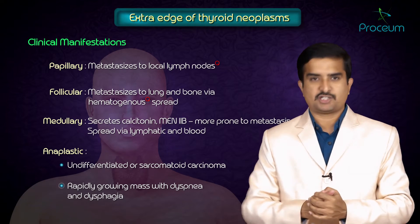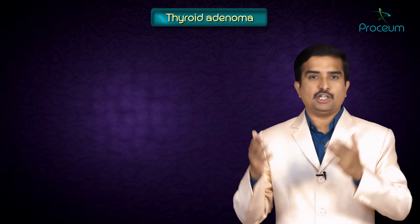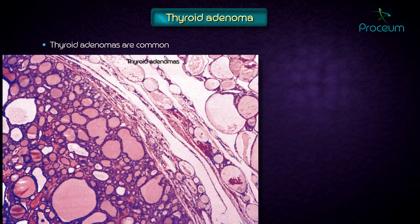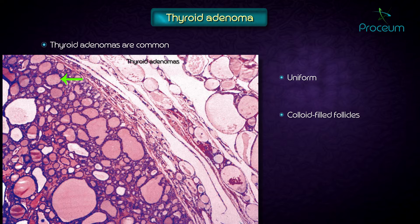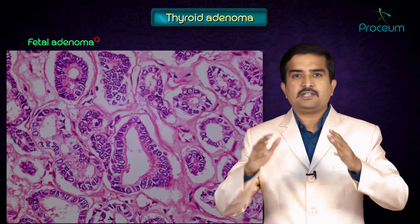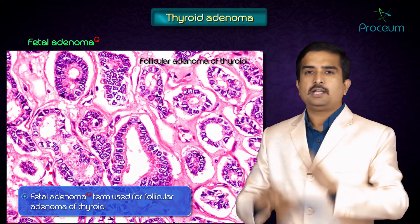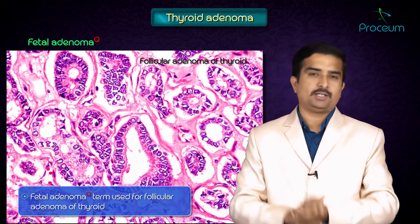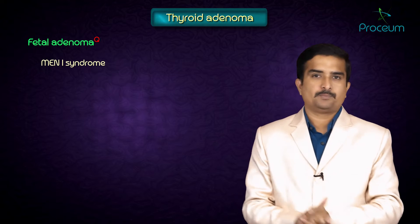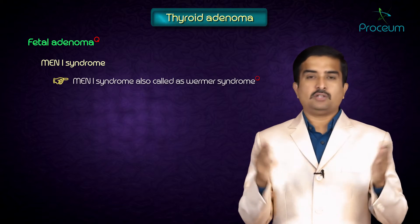Thyroid adenomas are common. Microscopically they contain uniform colloid-filled follicles. Although there are various histological types, they are not considered premalignant and are usually non-functional. The term 'fetal adenoma' is typically used for follicular adenoma of the thyroid.